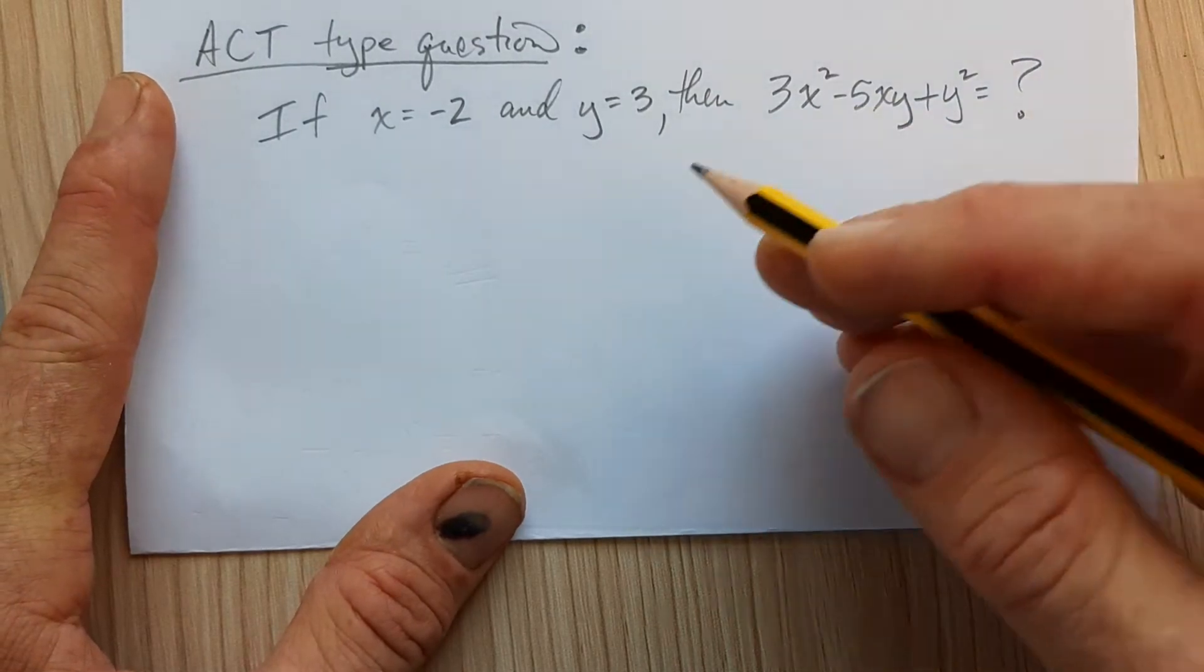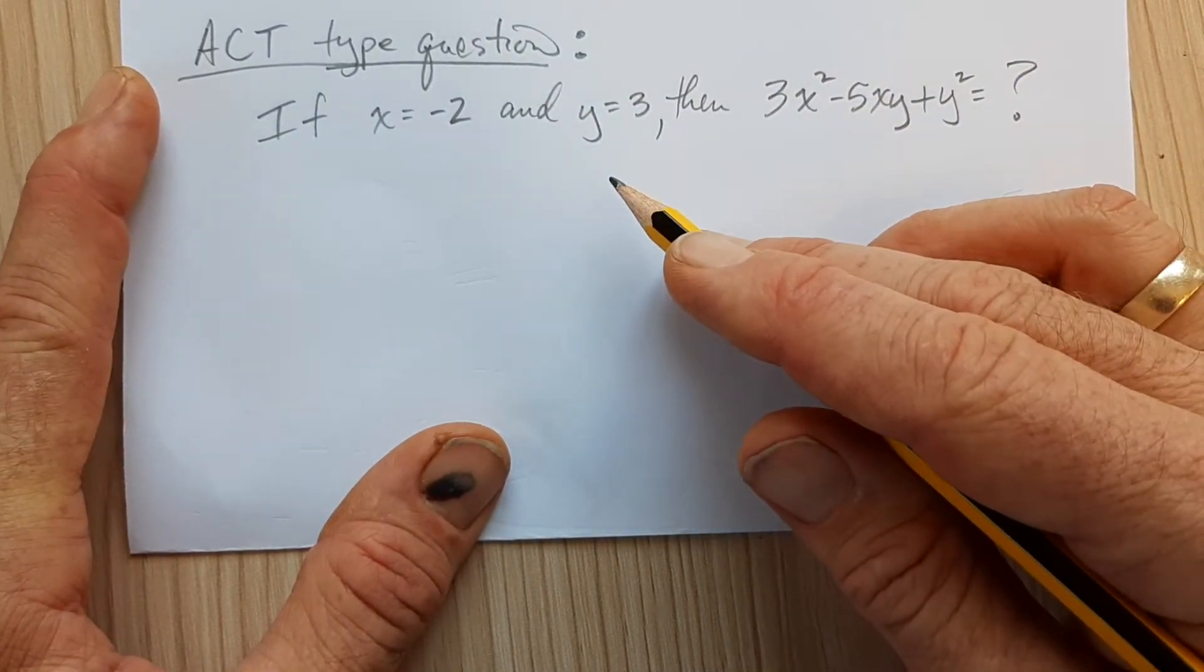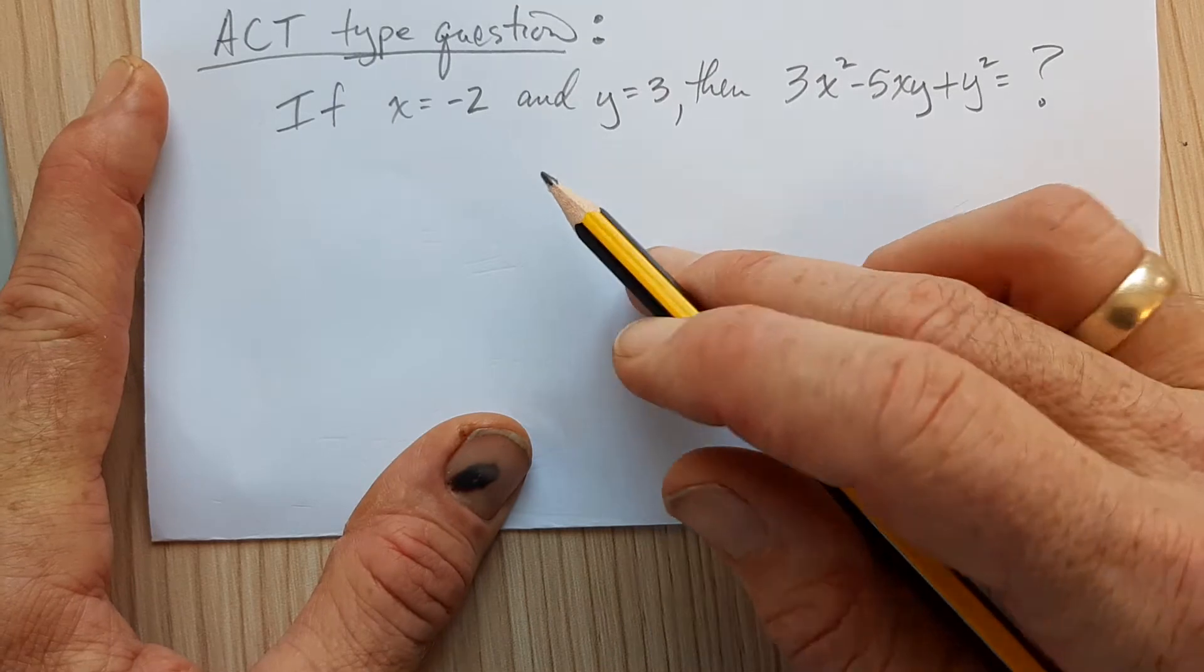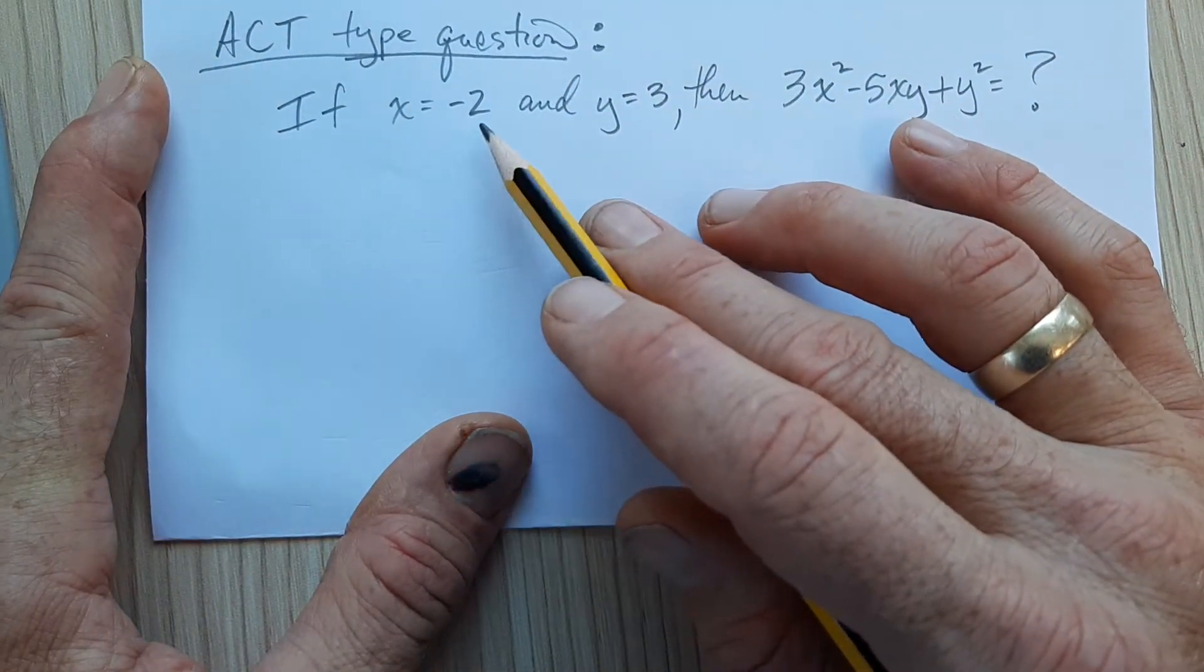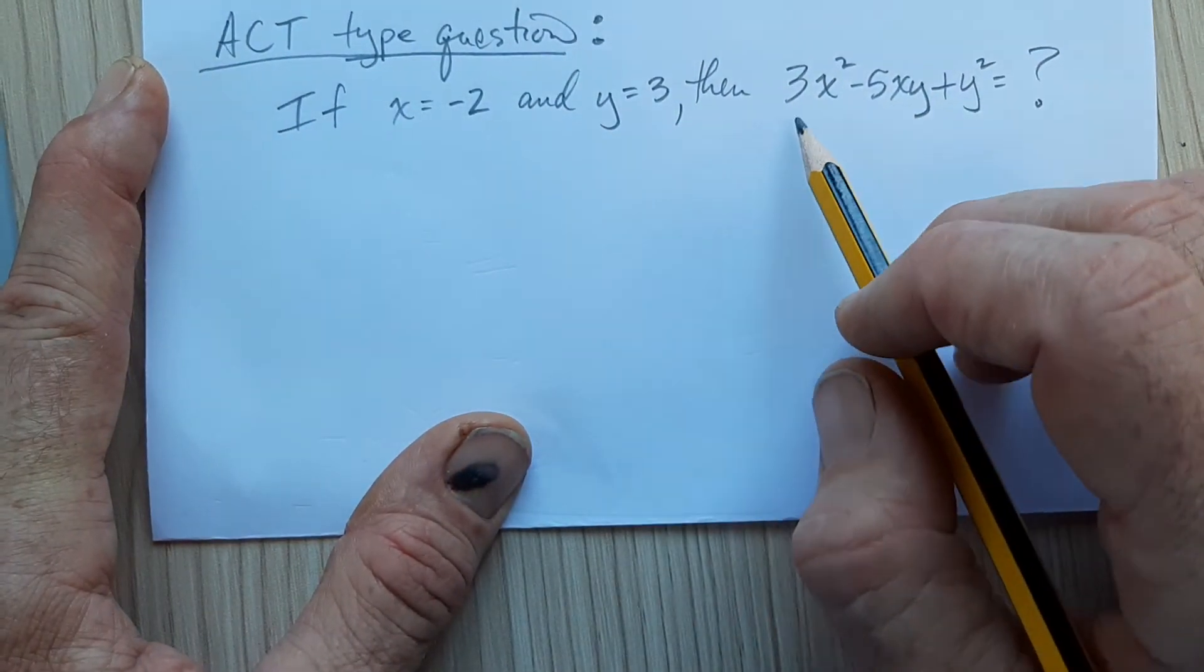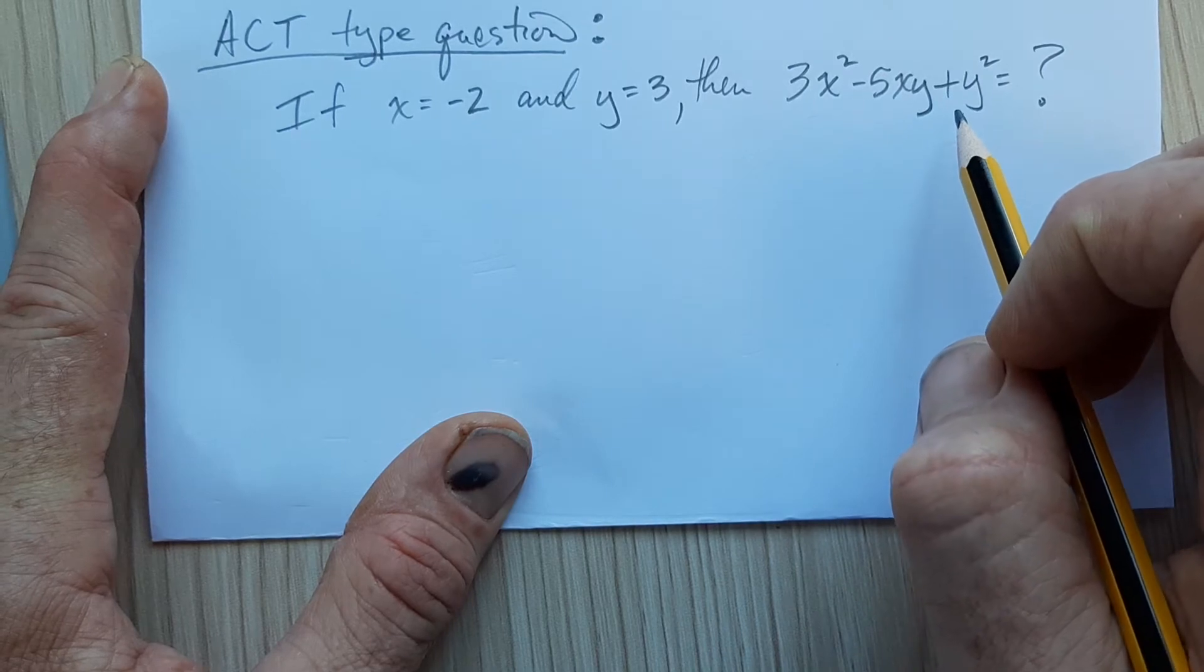This is straight from one of those ACT practice tests. So this is how they say it. If x is -2 and y is 3, then... I think you recognize this problem.